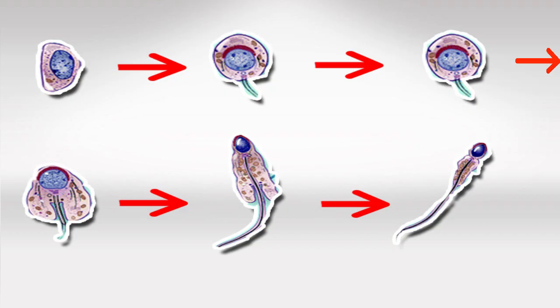In spermatogenesis, we have double the phases of oogenesis, so we have six phases, and only the first two phases are diploid, meaning they have full chromosomes.